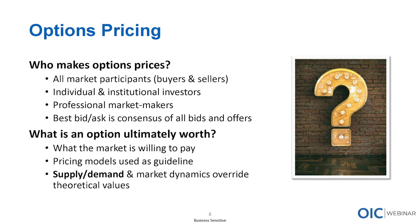The worth of any good or service — whether options, stock, or apples — depends on what somebody is willing to pay. You can only buy an option at a price at which somebody is willing to sell, and you can only sell at a price at which somebody is willing to buy. You can certainly use pricing models, which are simply mechanisms or formulas where you put in a specific set of inputs and get an output of an option price — a good guideline to begin the negotiation process, but just a guideline.